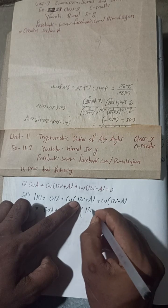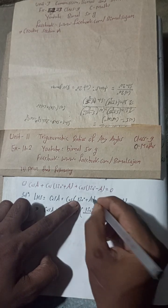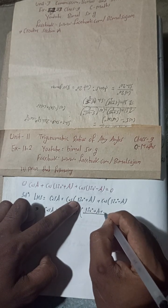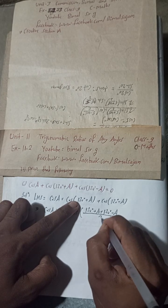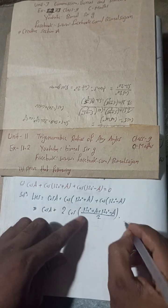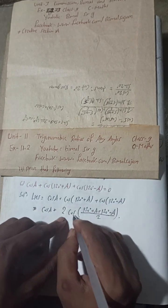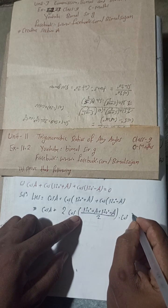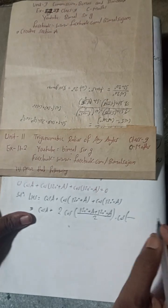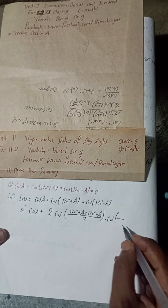So C plus D means 120 degree. Take this line 120 degree plus A plus this was 120 degree and minus A by 2. And then again 2 Cos C plus D by 2 and then Cos C minus D by 2.